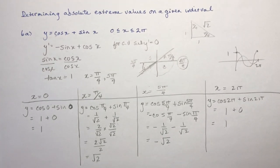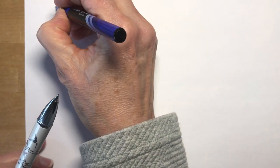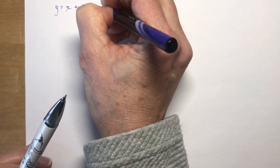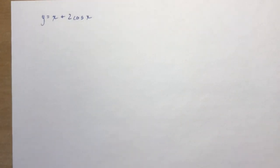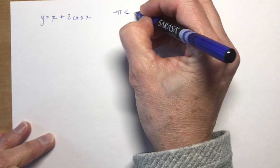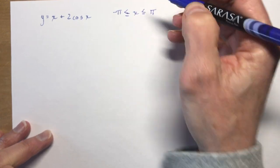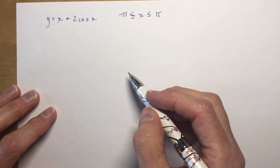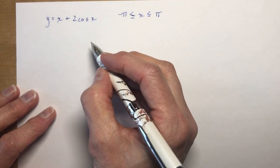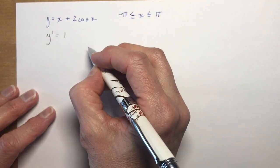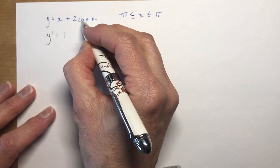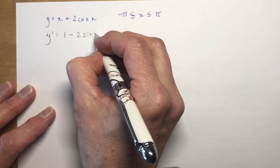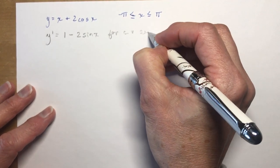Now I'm going to do a couple more. You might want to stop and try one now that you have a better idea of how these work. Problem B is y equals x plus 2cos x, and the domain is x between negative π and π. You know why they give this domain — trig functions continue infinitely, so you have to restrict the domain or you'd have an infinite number of solutions. Taking the derivative: y prime — derivative of x is 1, and derivative of 2cos x gives minus 2 sin x.